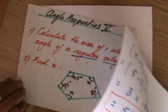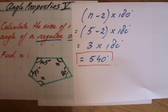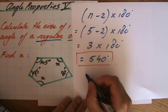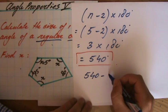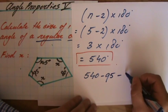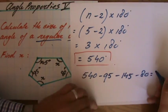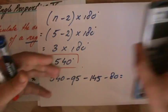Can I do it like this? I think you can still see it now. The total 540, take away 95, take away 145, take away 80. So, how much is left? How much of those 540 degrees is still left? 540 take away 95, take away 145, take away 80. 220 degrees.